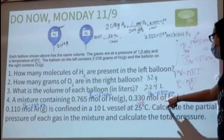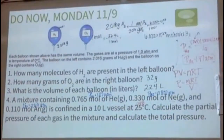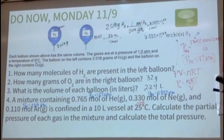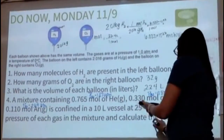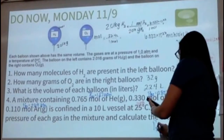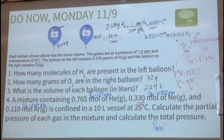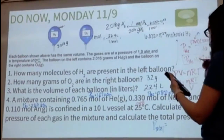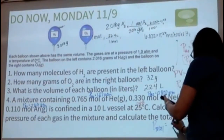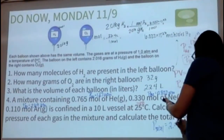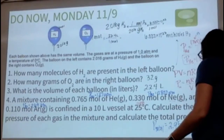To find total pressure using Dalton's law, add all partial pressures together: 1.87 + 0.807 + 0.269. Depending on significant figures and rounding, the total pressure is 2.95 ATM.